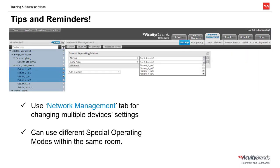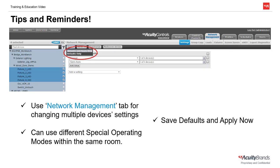A couple tips and reminders to keep in mind when programming InLight output devices. First, remember to use the Network Management tab when you want to change the behavior of multiple devices. Usually when changing these settings, you may need to change multiple — sometimes even hundreds — of devices at a time, and you can accomplish this easily using the checkboxes in the Network Management tab. Also, you can have devices in the same room with different special operating modes. For example, fixtures 1 and 2 can be set to normal while fixtures 3 and 4 are set to semi-auto. And finally, always remember to save defaults and apply now.